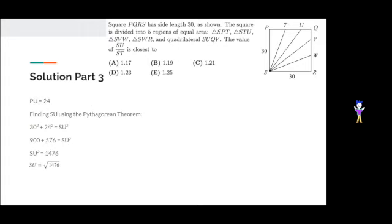Solution part three. We already found in solution part one that PU was 24, and we're going to use the Pythagorean theorem to find SU again. We're just going to assume that PSU is one big triangle, and then 30 squared plus 24 squared equals SU squared. 30 squared is 900, and 24 squared is 576. So, SU squared is 1476. So, SU by itself is the square root of 1476.